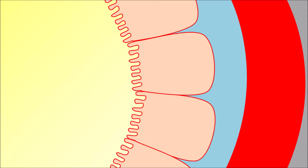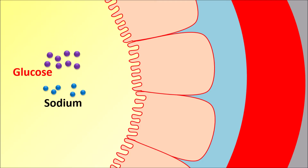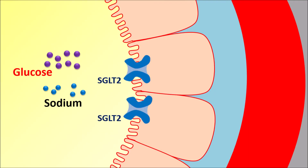Within the renal tubules, glucose and sodium are present in the filtrate and can be absorbed into the systemic circulation from the lumen of the renal tubules. For this they require some transporters. On the inner membrane, one of the transporters present is SGLT2 — sodium glucose co-transporter 2. Through this transporter, both glucose and sodium can enter into the renal membrane, but from this membrane they must be absorbed into the systemic circulation, requiring another type of transporter.